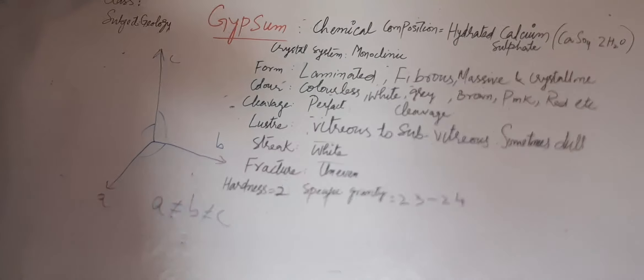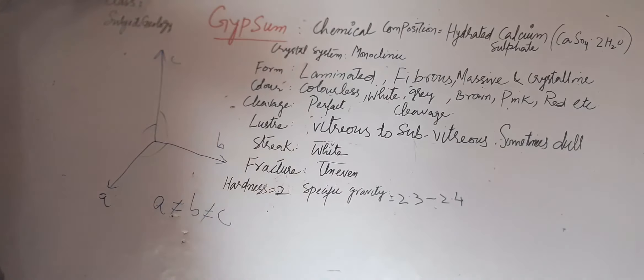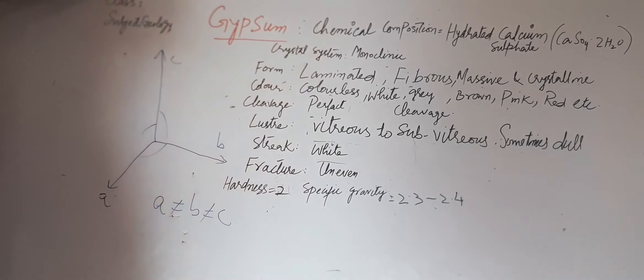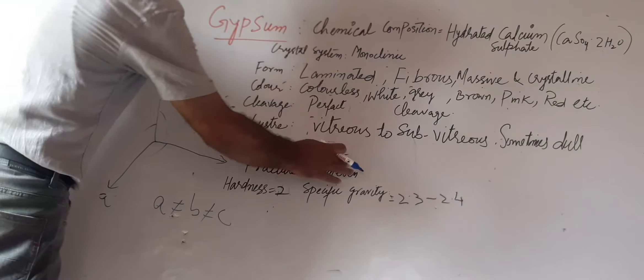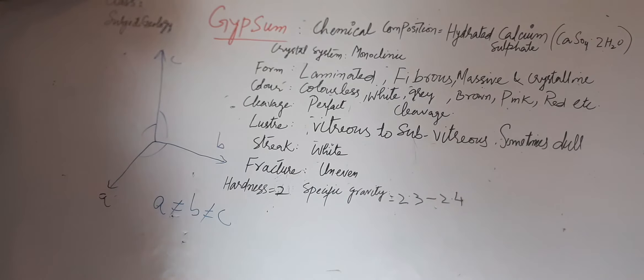Streak is the color of a mineral when it changes into its powder form. When a mineral is changed into its powder form, the property is known as streak. The color of powder of mineral gypsum is white. Fracture...